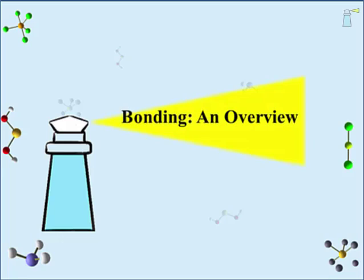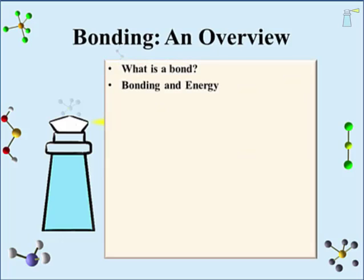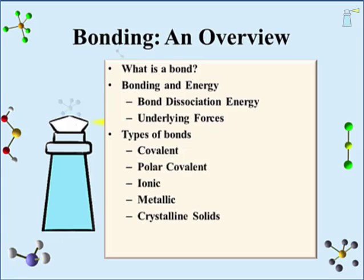This is the first lecture in this series and provides basic concepts and descriptions. The overview will start with an explanation of the bond, an exploration of bonding and energy, including bond dissociation energy and the underlying forces that drive binding. We will also take a preliminary look at the types of bonds, specifically covalent, polar covalent, ionic, metallic, and crystalline solids.